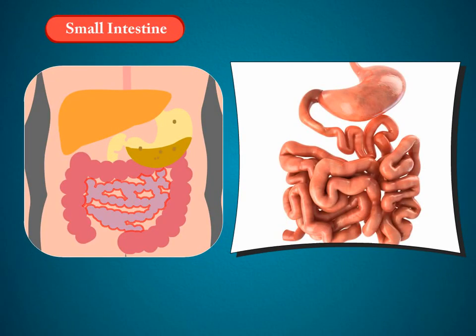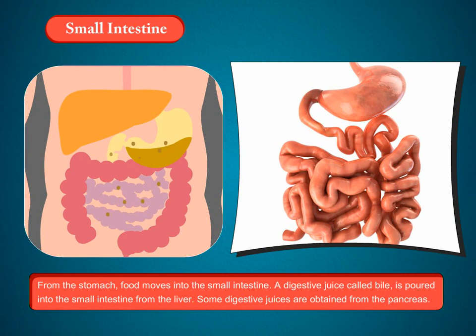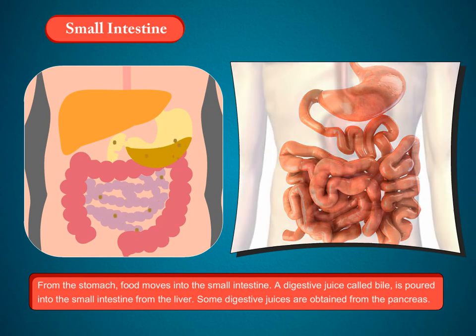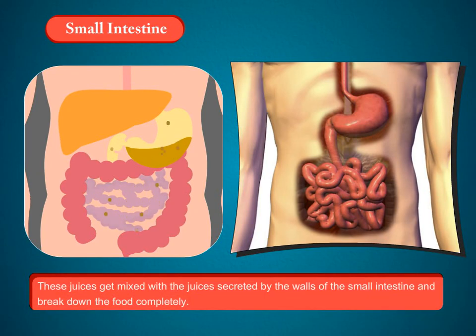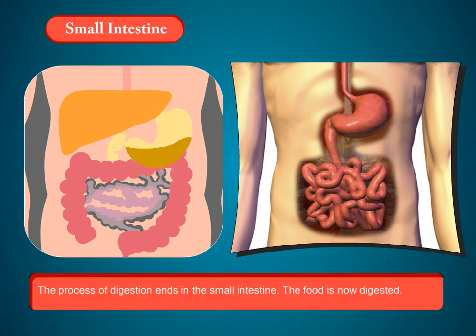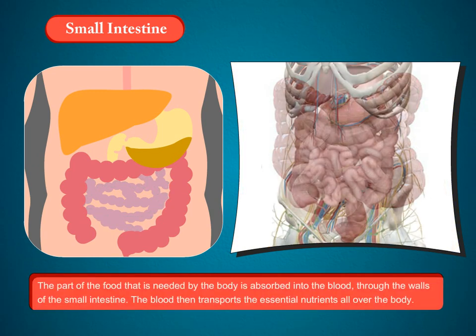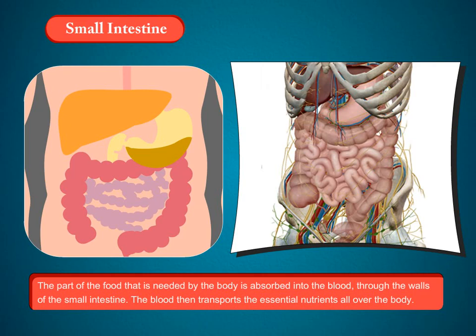Small intestine. From the stomach, food moves into the small intestine. A digestive juice called bile is poured into the small intestine from the liver. Some digestive juices are also obtained from the pancreas. These juices get mixed with the juices secreted by the walls of the small intestine and break down the food completely. The process of digestion ends in the small intestine. The food is now digested, and the part needed by the body is absorbed into the blood through the walls of the small intestine. The blood then transports the essential nutrients all over the body.